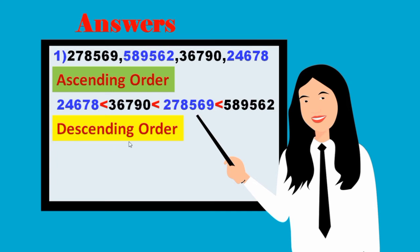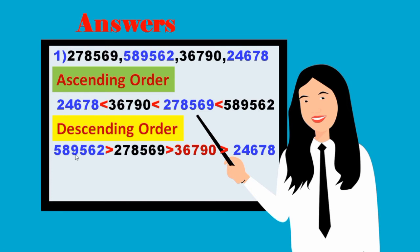Descending order means opposite of ascending order. So we write it in reverse: 5,89,562 is greater than 2,78,569 is greater than 36,790 is greater than 24,678. This is the ascending order and this is the descending order.